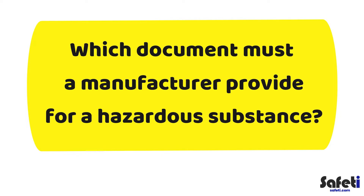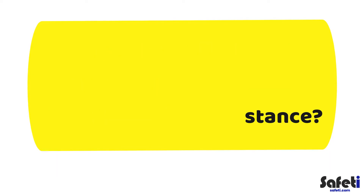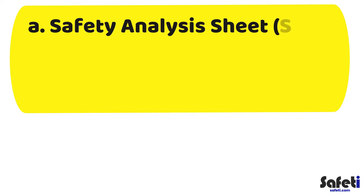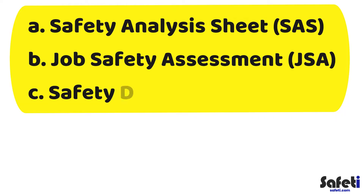Now that you've made it towards the end of this video, let's do a quick quiz to check you picked up on the key points. We've got three questions. Question one: which document must a manufacturer or producer provide for a hazardous substance? Is it A — a Safety Analysis Sheet (SAS), B — a Job Safety Assessment (JSA), or C — a Safety Data Sheet (SDS)?